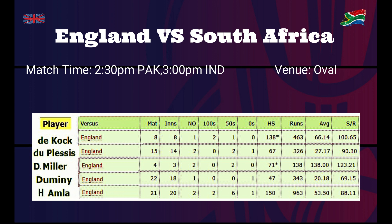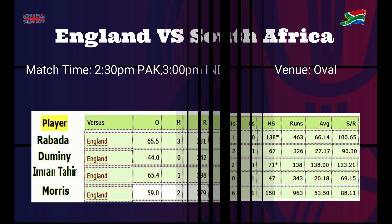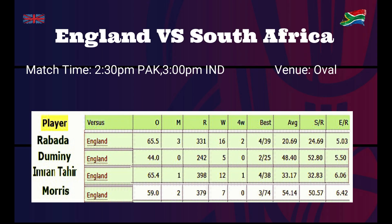David Miller has the highest average of almost 140 runs against England. De Kock also has a good average against England. Looking at South African bowling against England, Rabada has taken the highest wickets among all current South African team bowlers, followed by Imran Tahir with 12 wickets and Chris Morris with 7 wickets.